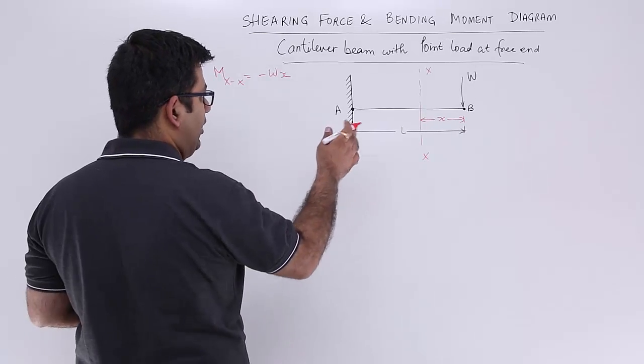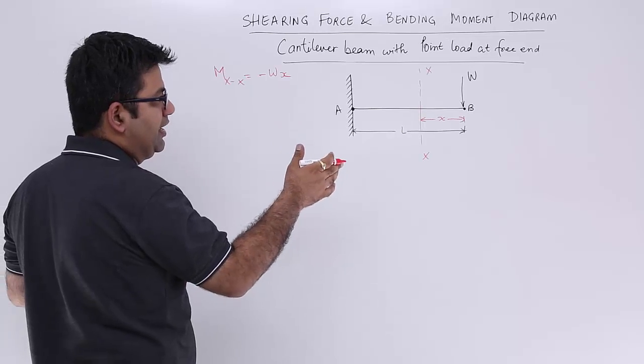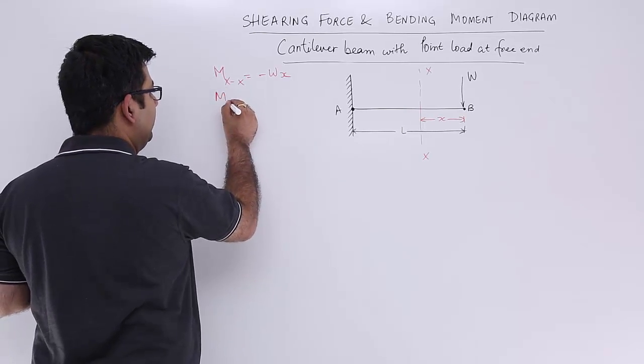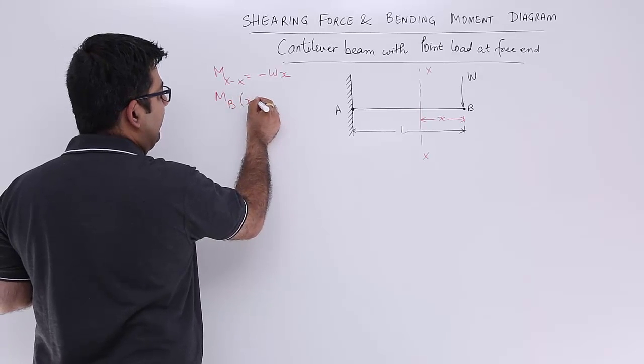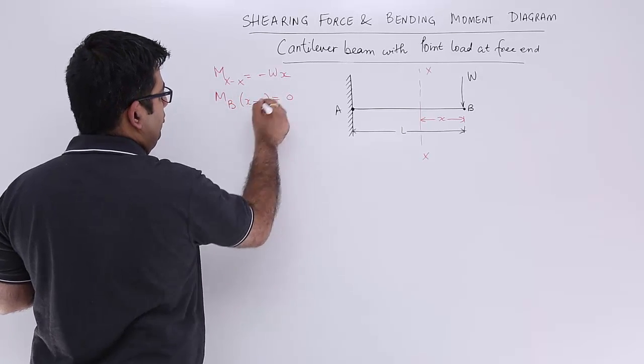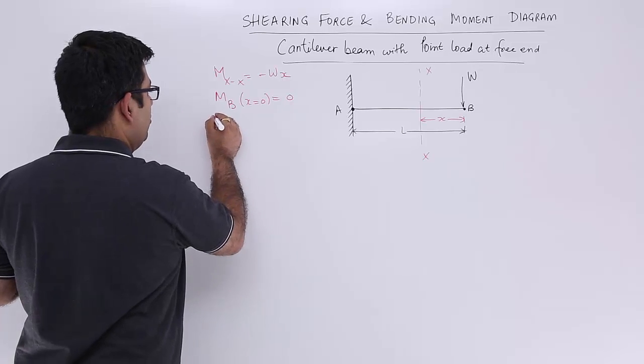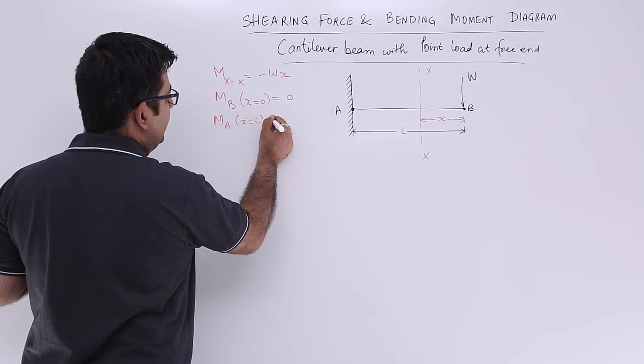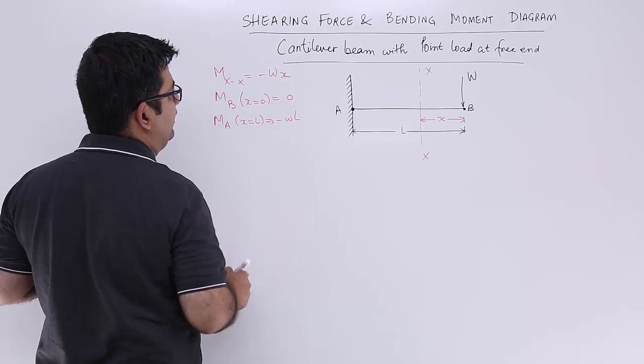So if you look at this, the variation is linear. So the moment at b, at b the value of x is 0, so it will be 0. Moment at a where the value of x is l, it will be equal to minus wl.